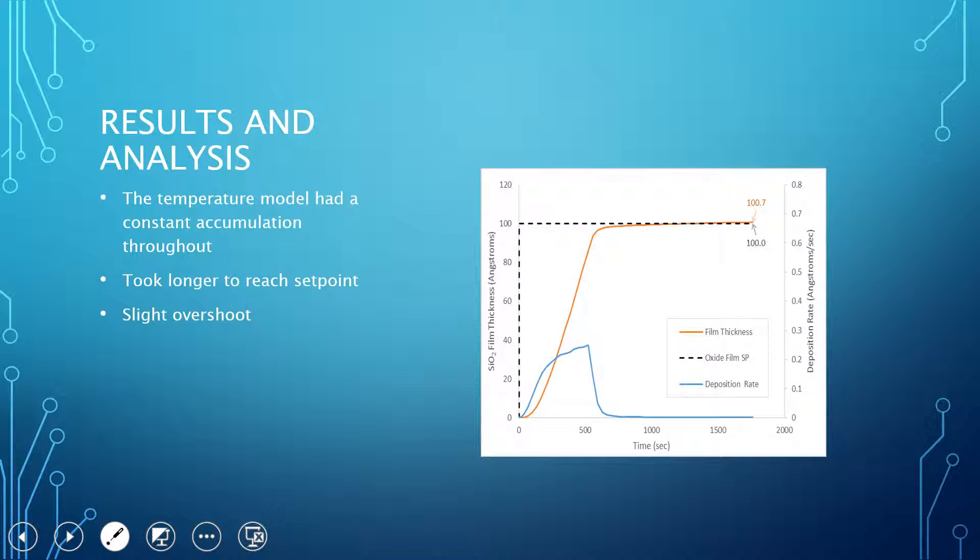So these are the results from our temperature model. As you can see, there's a very linear slope because the controller maxed out at the max temperature that we set it to. And because of that, the accumulation was fairly constant, but as you can see, we were able to control that, and that was the deposition right down here. We were able to control that so that if you stopped around here, which would be about 20 minutes, it would have been right on.